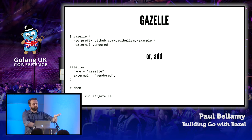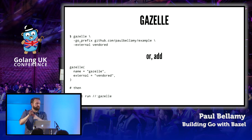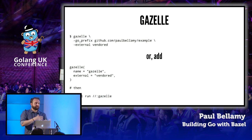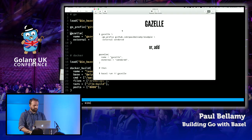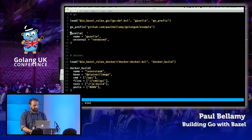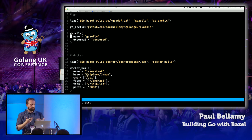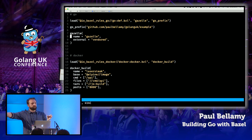In general with Bazel there are two ways to manage dependencies: you can either put them in your build or workspace file and have Bazel fetch the repository, or with rules_go you can say 'I've already vendored it using GVT or go dep.' I'd favor the latter because it plays much nicer with existing Go tooling. This Gazelle command has actually generated pretty much all of the Go build configuration we need.